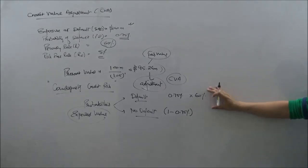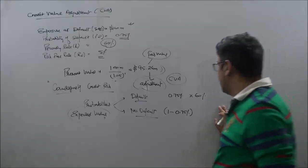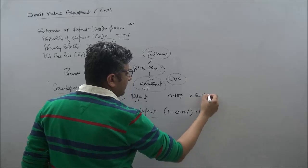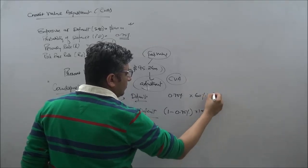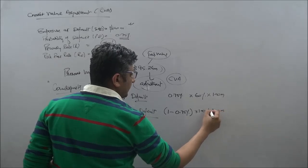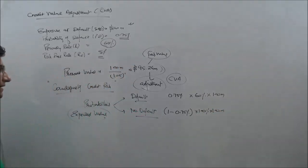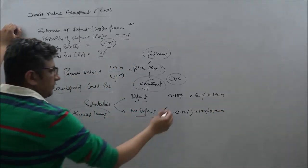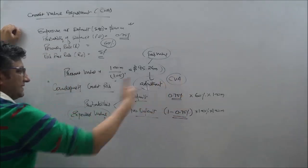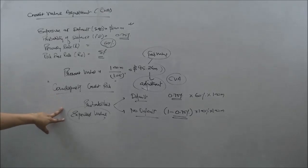But if it does not default, then I shall receive the entire amount. What is the amount that we are talking about, of course, here is 100 million. And basis these probabilities.